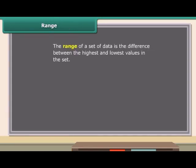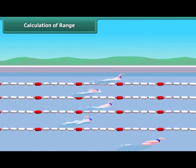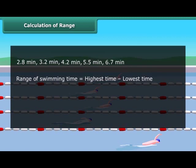The range of a set of data is the difference between the highest and lowest values in the set. To find the range, first order the data from least to greatest, then subtract the smallest value from the largest value in the set. So children, now you can also find the range of any set of data. Five participants completed their swimming race. Can we calculate the range of swimming time from this data? Yes, it's simple. First, order the data from least to greatest. Now subtract the least value of time from the highest. So the range of swimming time is 3.9 minutes.